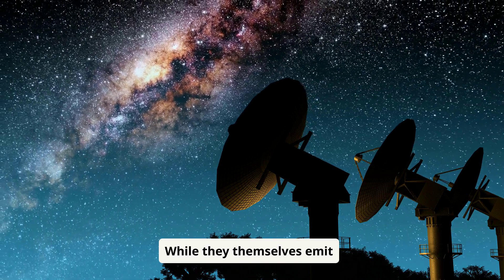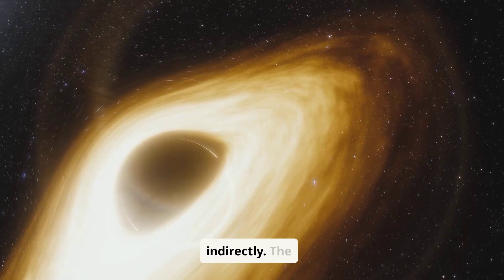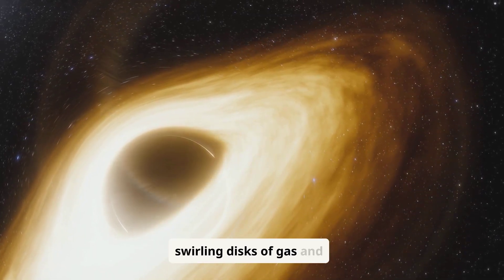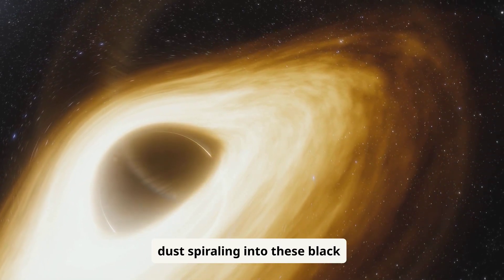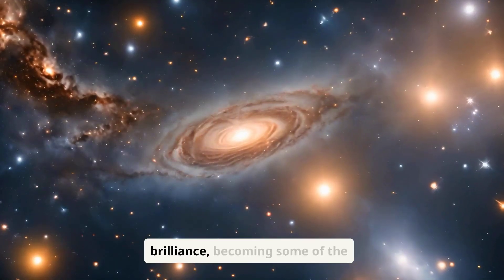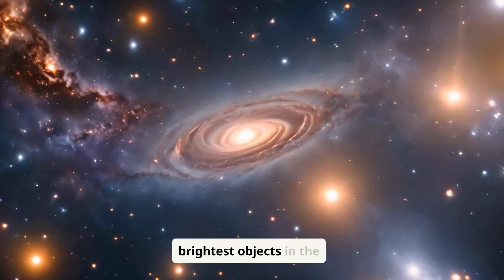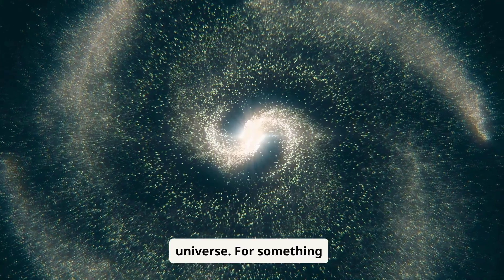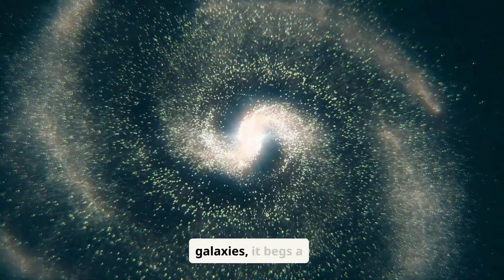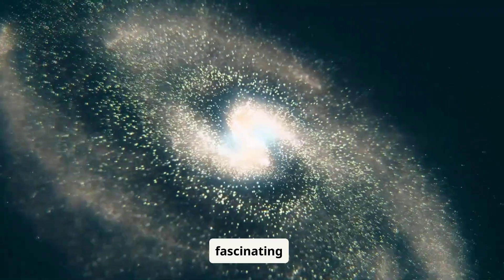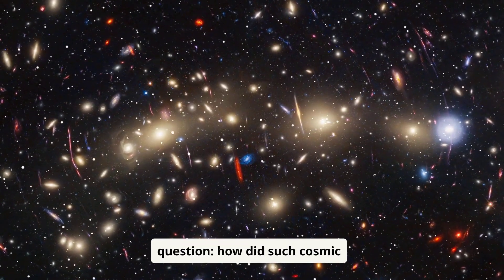While they themselves emit no light, we can see them indirectly. The swirling disks of gas and dust spiraling into these black holes blaze with brilliance, becoming some of the brightest objects in the universe. For something so massive and central to galaxies, it begs a fascinating question. How did such cosmic giants form?